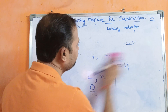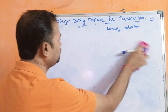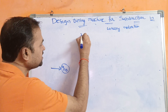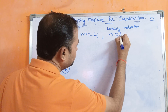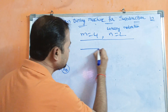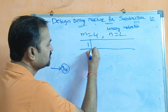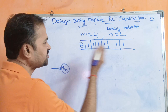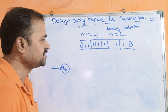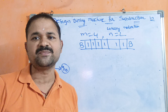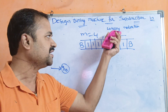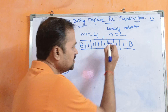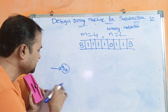Let us design the Turing machine. The initial state is q0. With m equals 4 and n equals 2, the input tape contains four ones for m, then a separator zero, then two ones for n. We use zero as the separator between the two numbers.